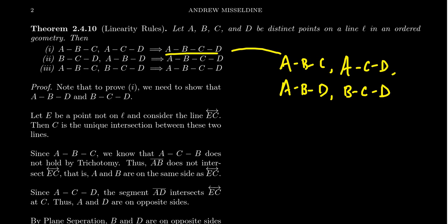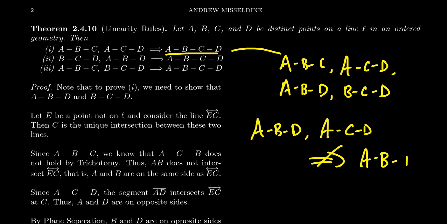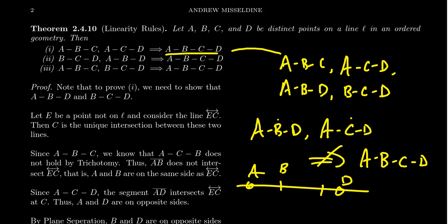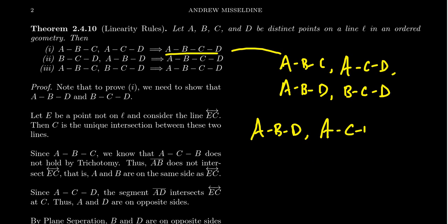Now be aware that any combination of two betweenness statements does not always imply this four-element betweenness. For example, if we had B is between A and D, and C is between A and D, this does not imply A-B-C-D. We know B and C are both between A and D, but we don't know how B and C relate to each other. On the line with A and D, it could go A-B-C-D, but it could also go A-C-B. So just because you know two betweenness statements does not automatically imply the other two.